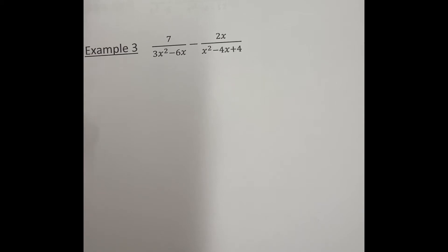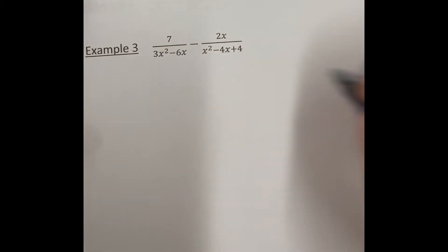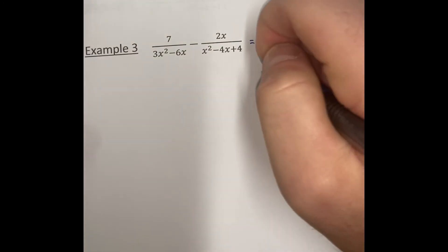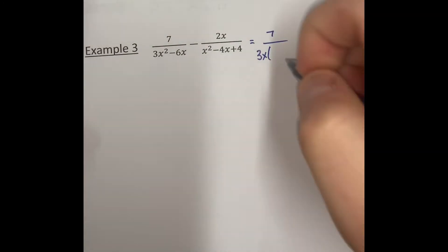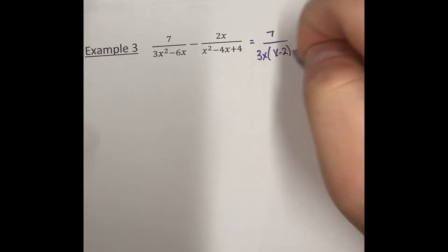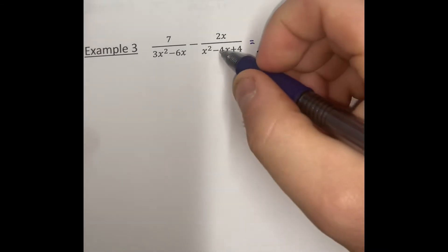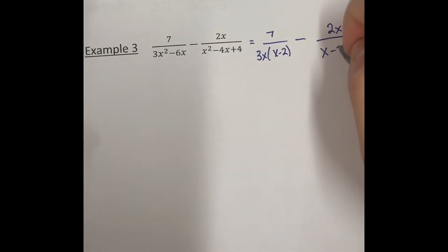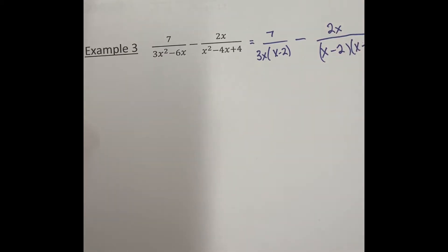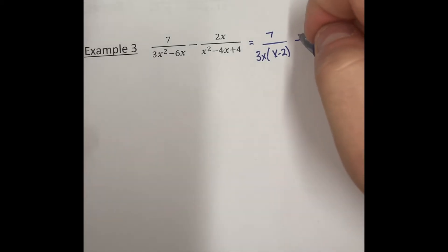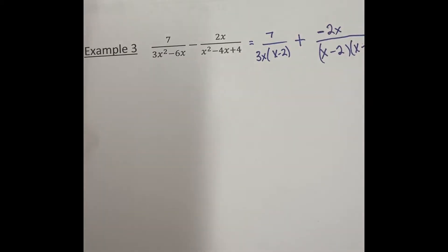In our third example, we need to get common denominators. But the first thing we need to do before finding common denominators is factor the denominators. We get 7 over — factoring out 3x — we're left with x minus 2, minus 2x. In the other denominator, we can factor that as x minus 2 times x minus 2. We can go ahead and change this to addition and switch the sign of the negative 2x.